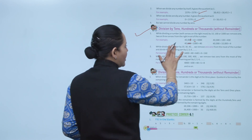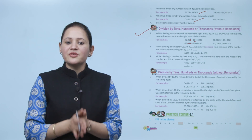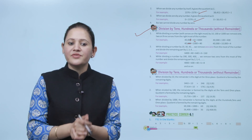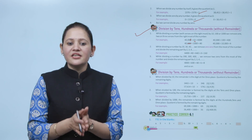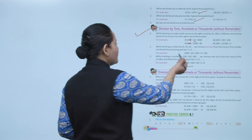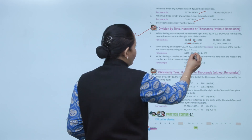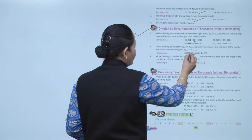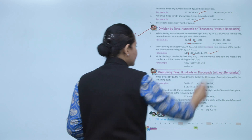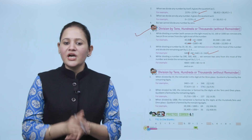While dividing a number by 20, 30, 40, and so on, we remove 1 zero from the rightmost of the number and divide the remaining part by 2, 3, 4, and so on. For example, 64,100 divided by 40: first remove 1 zero, giving 6,410 divided by 4, which equals 1,602. Wait — 6410 divided by 4 gives 160. Clear.